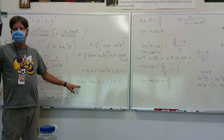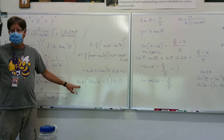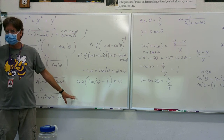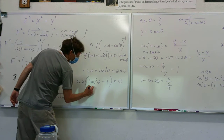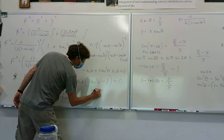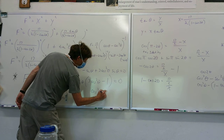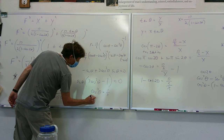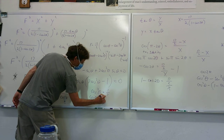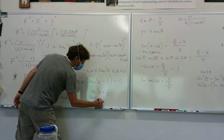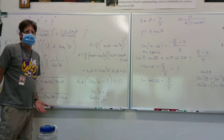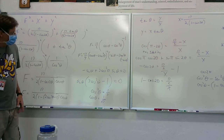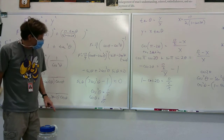So we get cosine² theta equals 1/3. Cosine theta equals positive 1 over the square root of 3. We don't want a negative angle — we've already looked at the picture and we want the positive value. There it is.